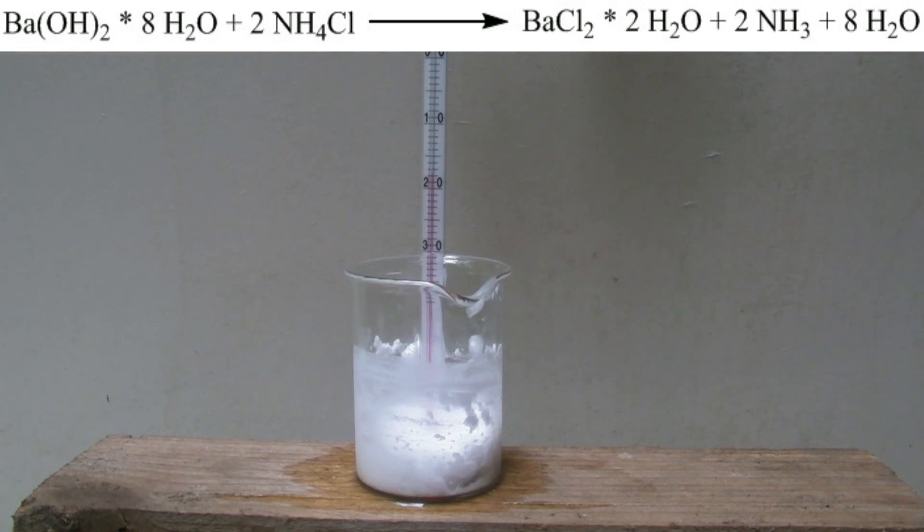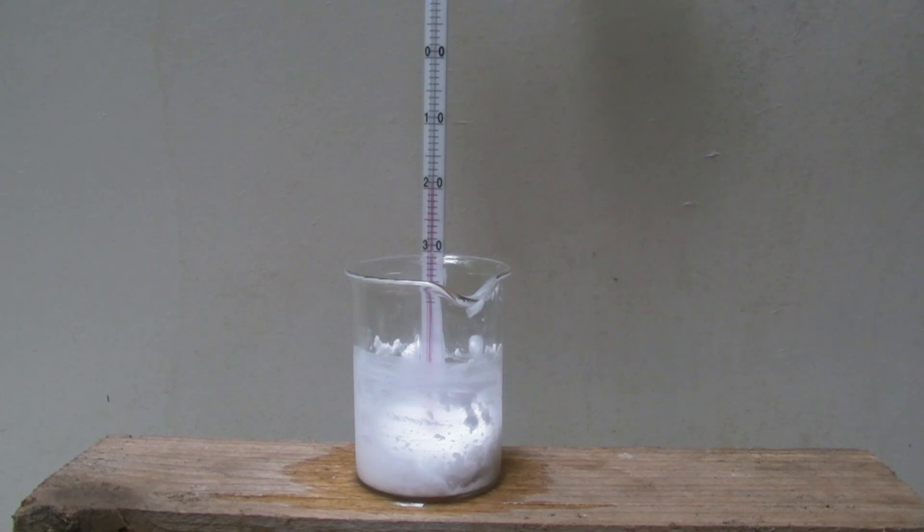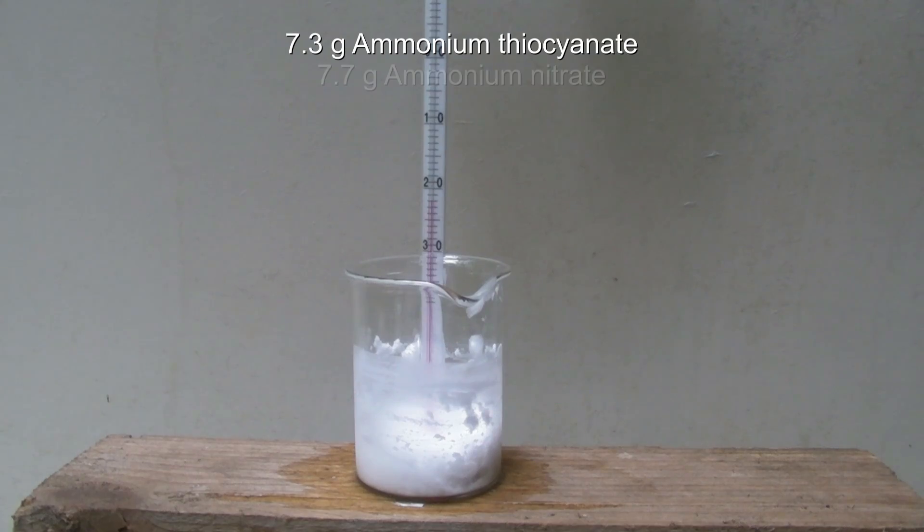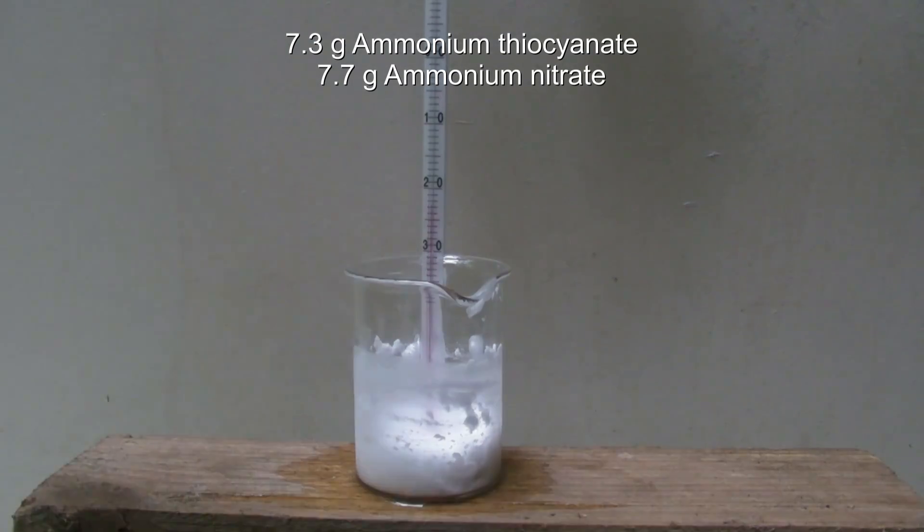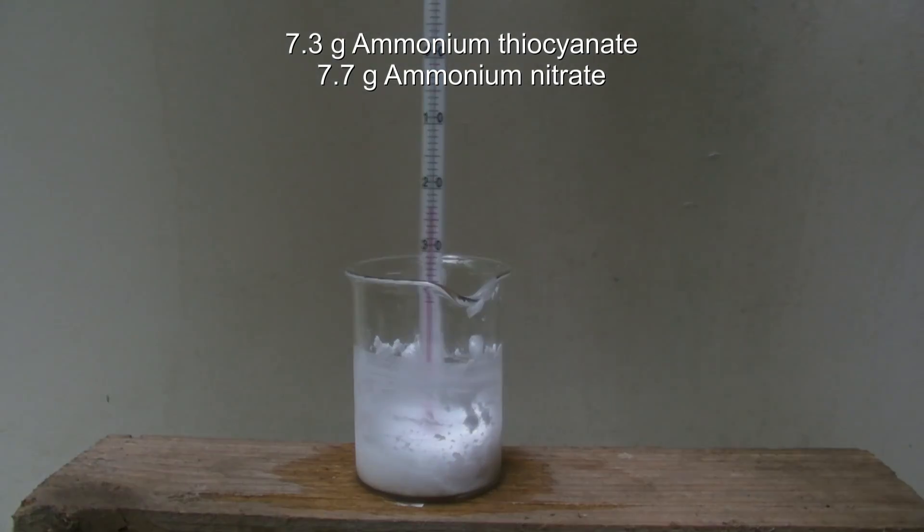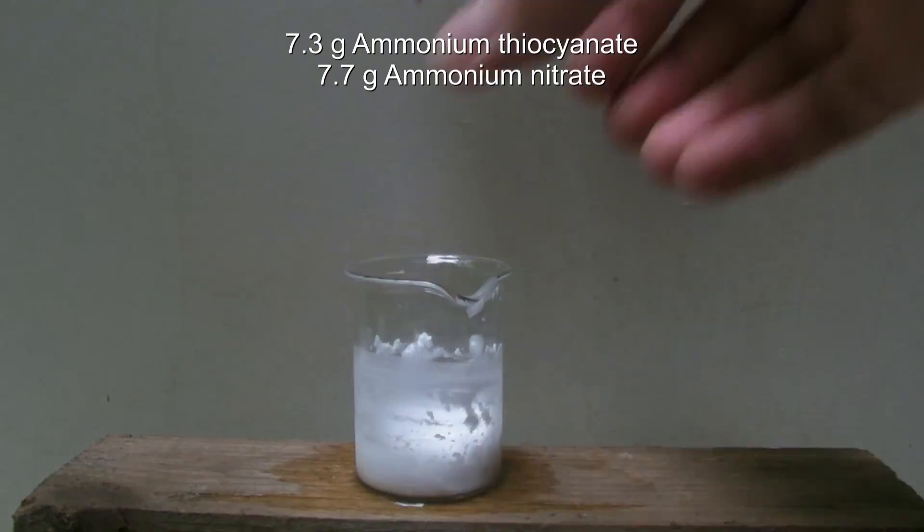The barium chloride can be recycled and used for other synthesis and experiments. Instead of the ammonium chloride, 7.3 grams of ammonium thiocyanate or 7.7 grams of ammonium nitrate can also be used, which causes less toxic barium salts to form.